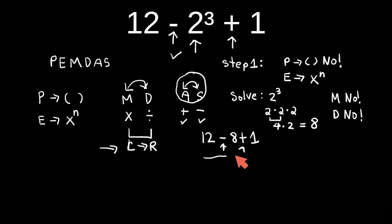Can we do 8 plus 1? No. The first thing you need to do is subtraction because we do it from left to right. If you solve this mentally: 12 minus 8 gives you 4. Now this problem turns into 4 plus 1, and 4 plus 1 is 5. Did you get 5?